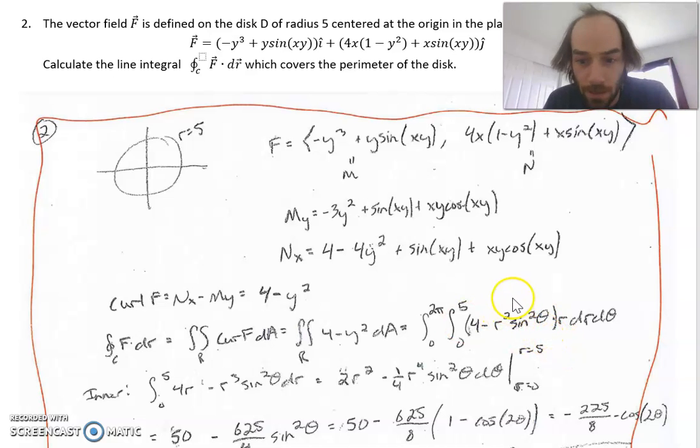Anyway, from there I'm gonna distribute the r in, so I get 4r minus r cubed times sine squared theta. I did it as an inner and outer integral, so the inner integral is this with respect to r. This goes to 2r squared, this here goes to minus one-fourth r to the fourth, and then the sine squared doesn't change, it gets treated as a constant.